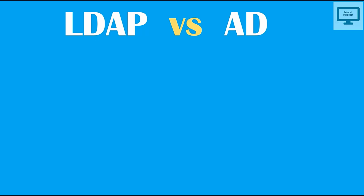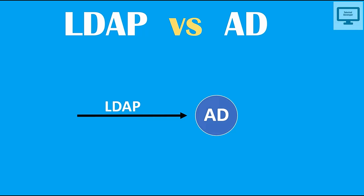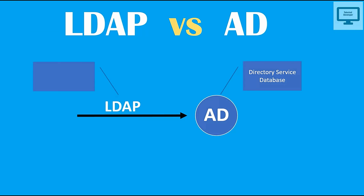So what is the relationship between LDAP and Active Directory? LDAP is a way of speaking to Active Directory. Active Directory is a directory services database, and LDAP is always used to talk with it — it is a protocol used to communicate with Active Directory.